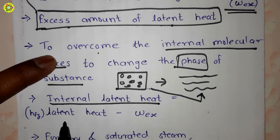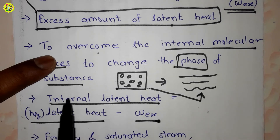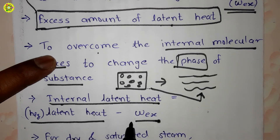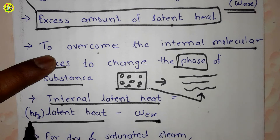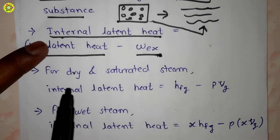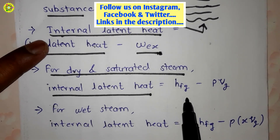Now in formula form, the internal latent heat is equal to latent heat, that is HFG, minus WEX, which is the external work done during evaporation. So: internal latent heat = HFG − WEX.